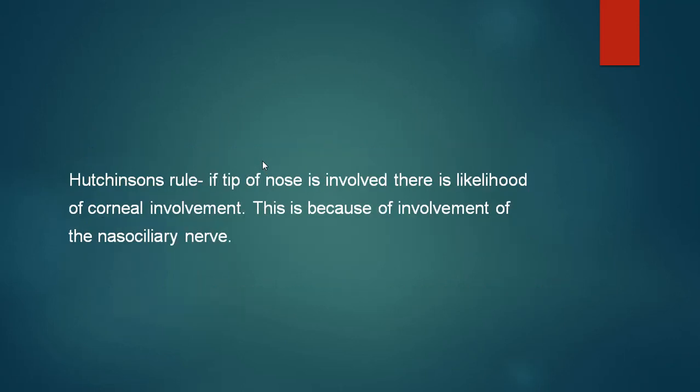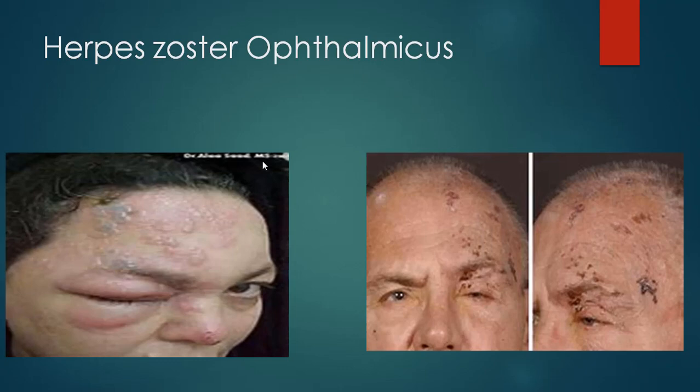It is important to remember that if the tip of the nose is involved, there is a likelihood of corneal involvement because of involvement of the nasociliary nerve. This rule is called Hutchinson's rule, though it is not infallible — sometimes the tip may be involved but the cornea may not be, and vice versa. Here you see photographs of a patient with vesicular eruptions on one side of the face and involvement of the tip of the nose with marked edema and closed lids. On the right side, typically only one side of the face and forehead is involved, with scabs not crossing the midline.